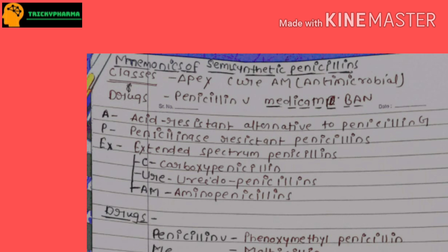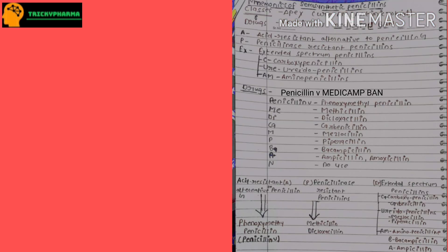EX indicates extended spectrum penicillin, and there are three subclasses: C indicates carboxy penicillin, URE indicates ureido penicillin, and AM indicates aminopenicillins.